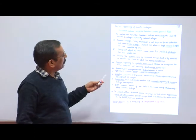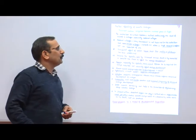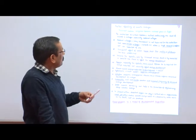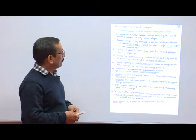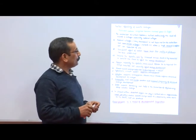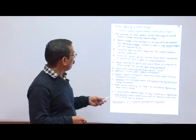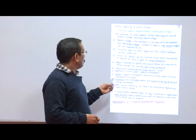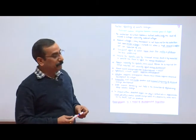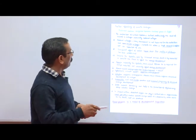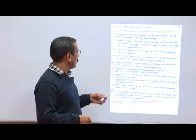Cytokinin except zeatin suppresses the embryo, and ethylene suppresses the embryo. Abscisic acid suppresses abnormal development of embryo. Gibberellic acid and zeatin produce an increased frequency of abnormal embryo. If we use gibberellin and zeatin, we can observe high abnormality in our culture.